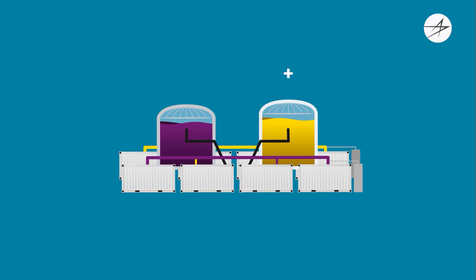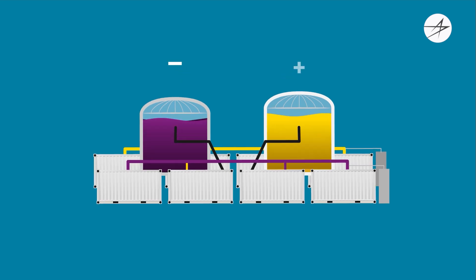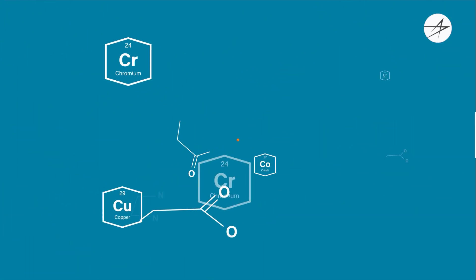One to hold the positive electrolyte, or pozilite. The other to store the negative electrolyte, or negalite. Both the pozilite and negalite contain engineered active materials that are optimized for durability when charging and discharging on a daily basis. As a result, GridStar Flow is estimated to last for over 20 years.